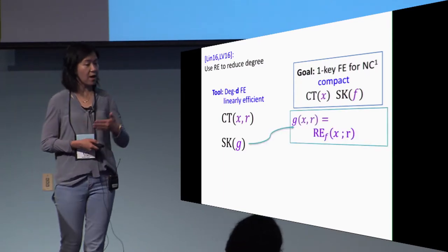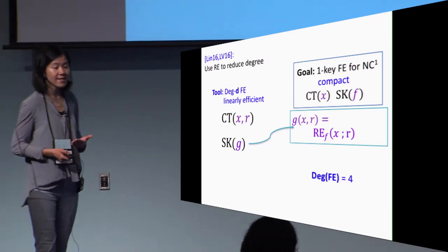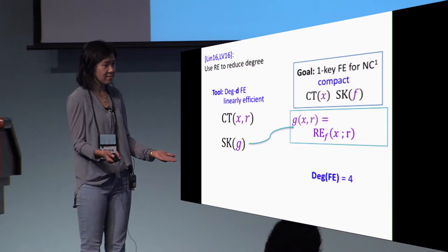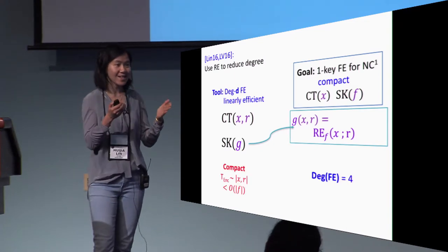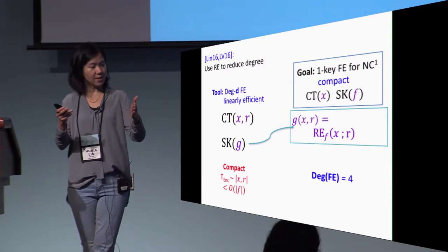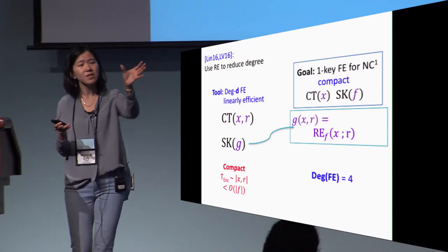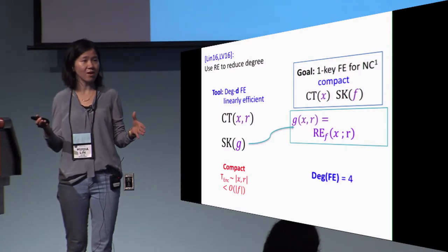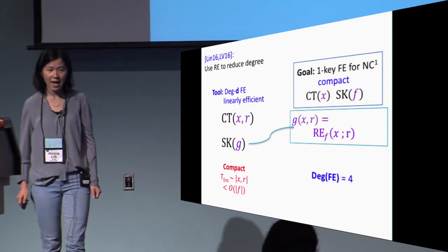The benefit is that because randomized encoding can be computed in degree four, now the degree of FE is just four. Of course, it cannot be just so easy. It turns out that unfortunately compactness does not hold. Why? Because to encrypt the input, encryption will take time at least linear in the input length. Now the input contains the random table for computing the randomized encoding, which is at least as large as the size of the function, as opposed to being sublinear. So we do not have compactness.